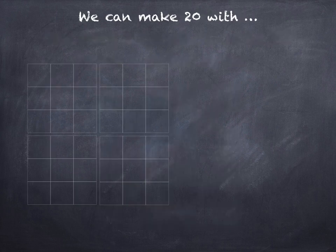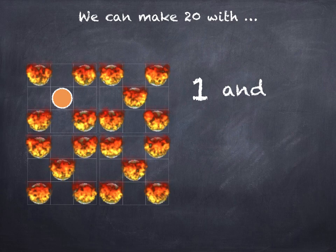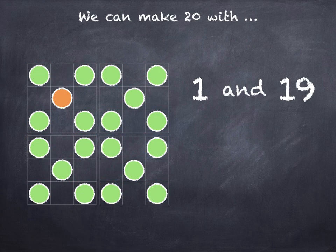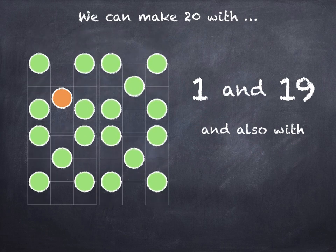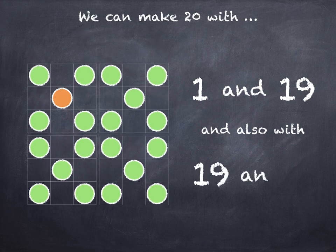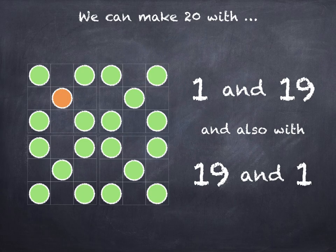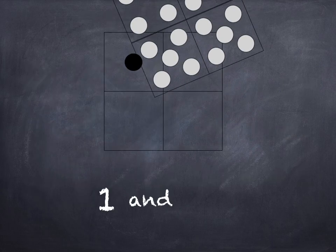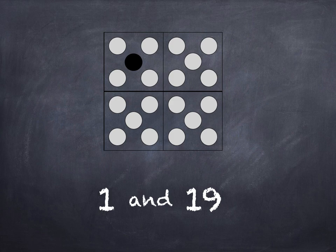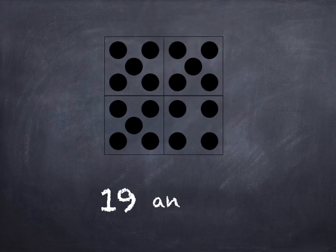We can make 20 with 1 and 19, and also with 19 and 1.